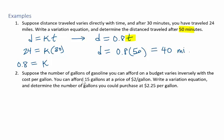Suppose the number of gallons of gasoline you can afford on a budget varies inversely with the cost per gallon. You can afford 15 gallons at a price of $2 per gallon. Write a variation equation and determine the number of gallons you could purchase at $2.25 per gallon.